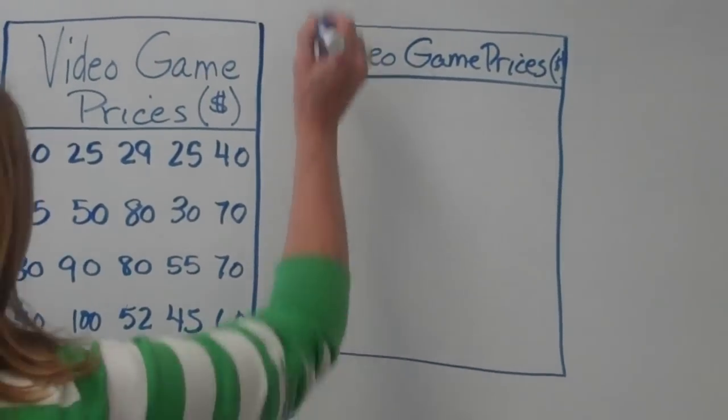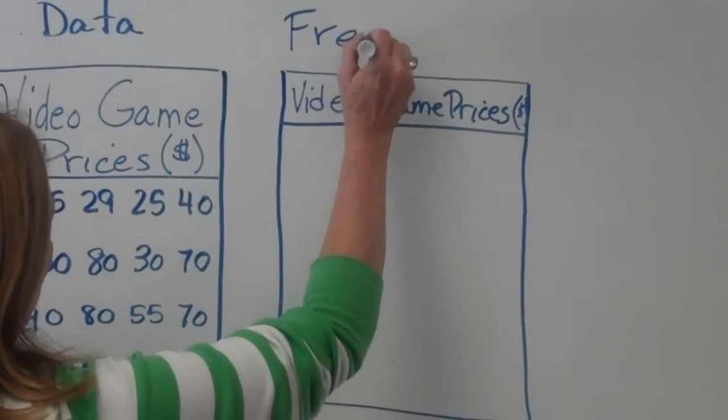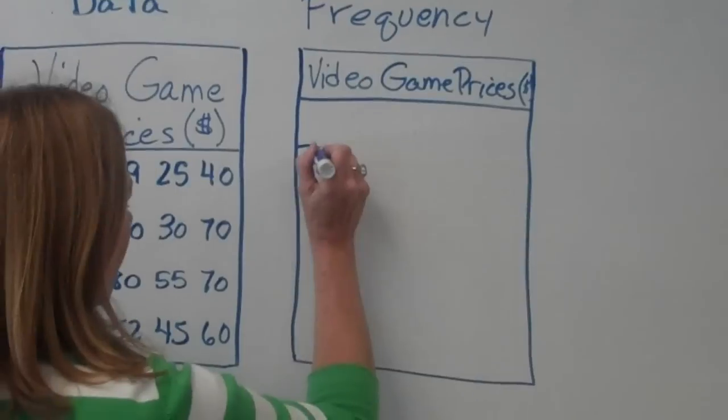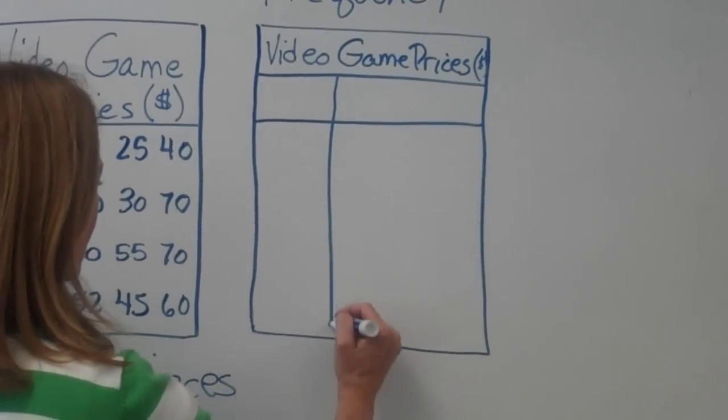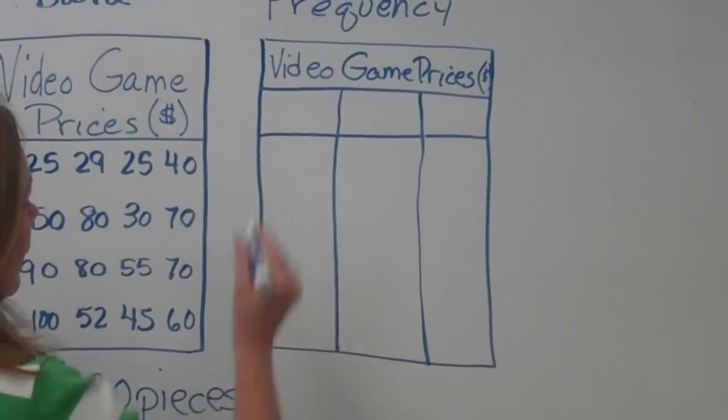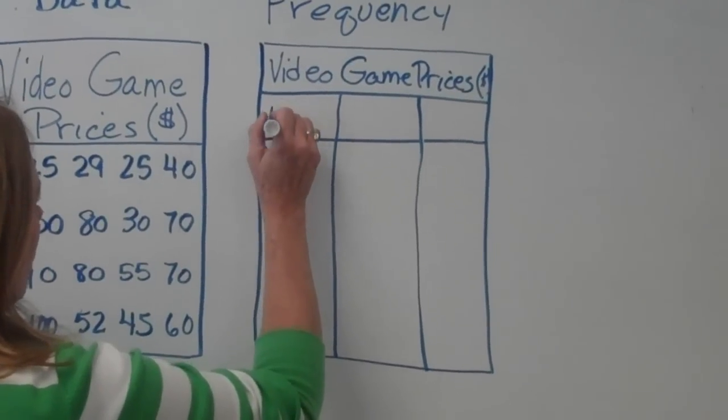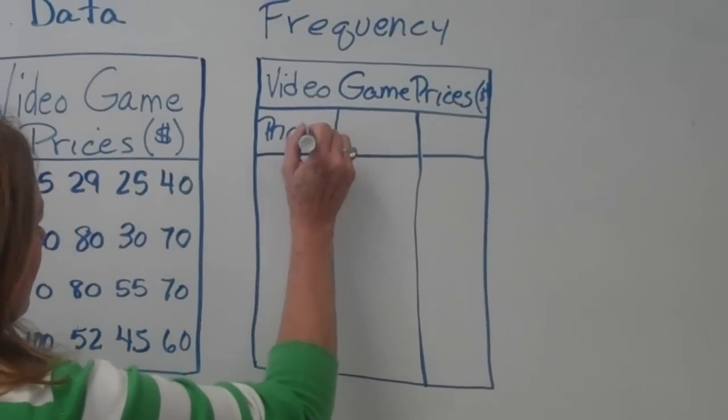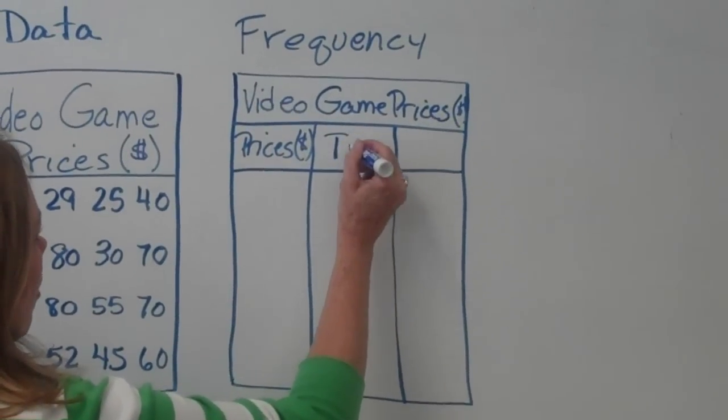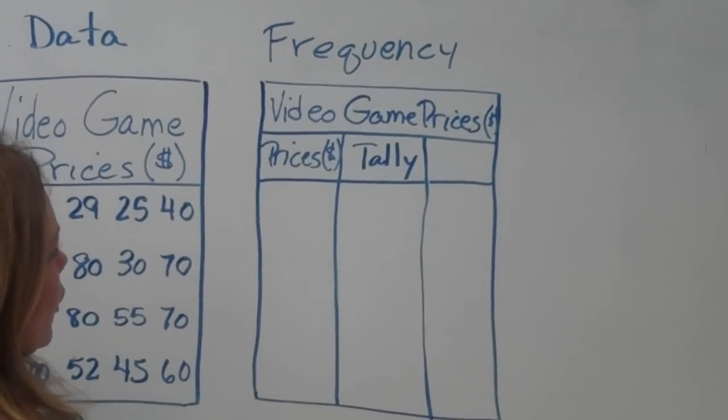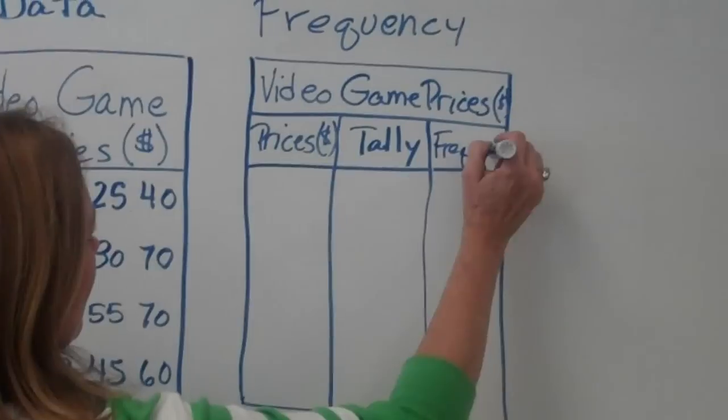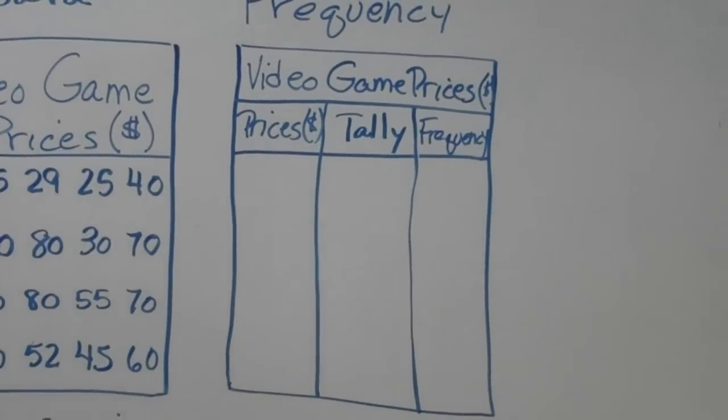The next step in creating your frequency table would be to create three columns. We're going to title each of those columns. The first one will be our prices in dollars. The second one will be our tally marks. The third one will be our totals of our tally marks, and we call that our frequency, hence the name frequency table.